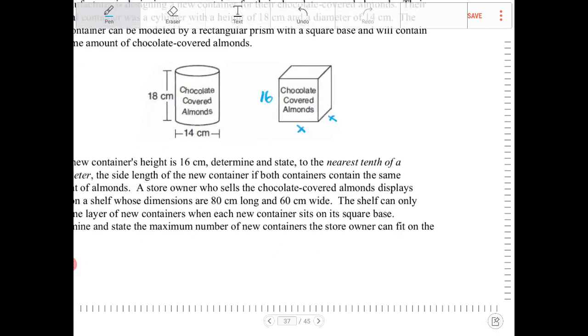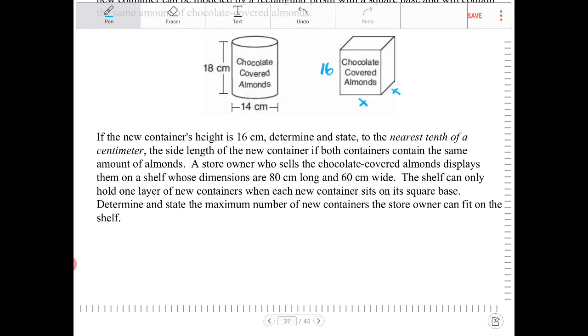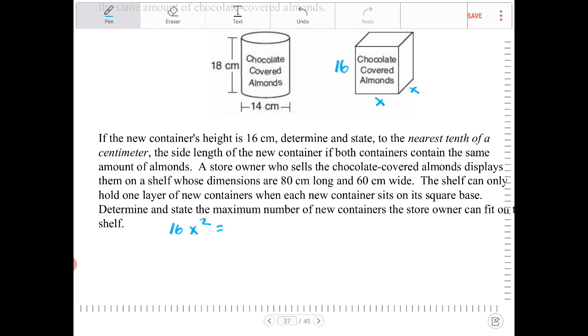So that means the volume of the new prism, of the new container, is going to be 16x squared. And this will be equal to the volume of the old container, which is pi times r squared, which is 7, because half of 14. 7 squared times 18.